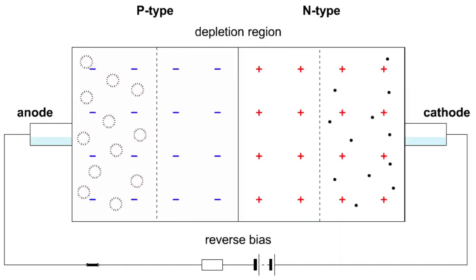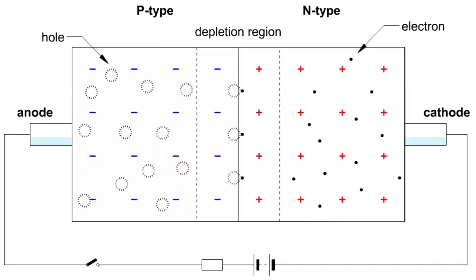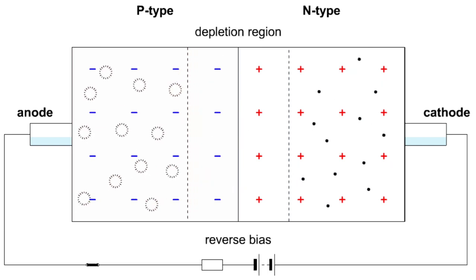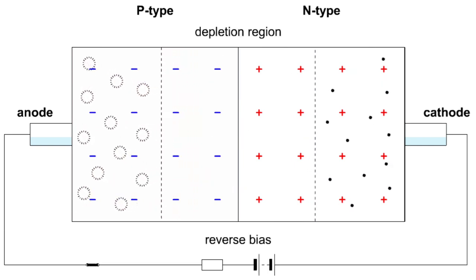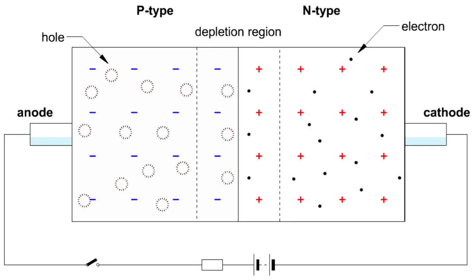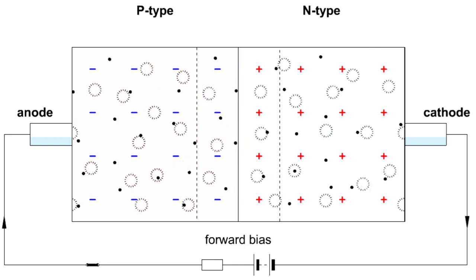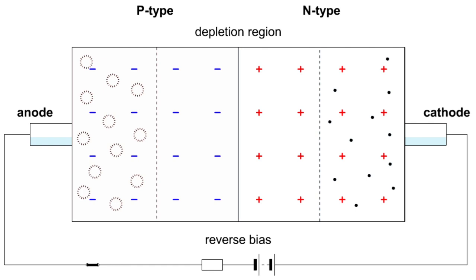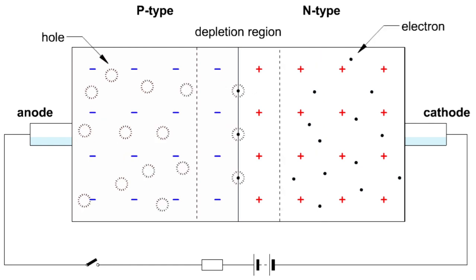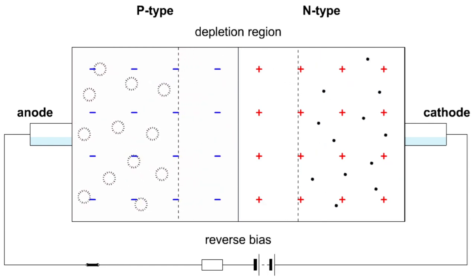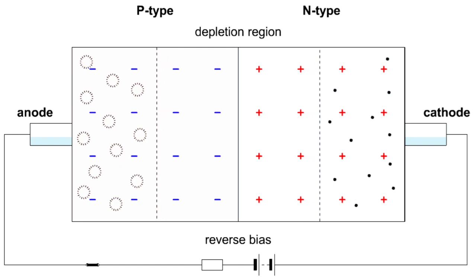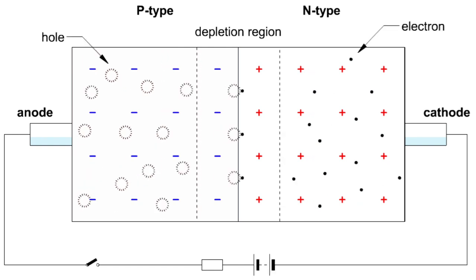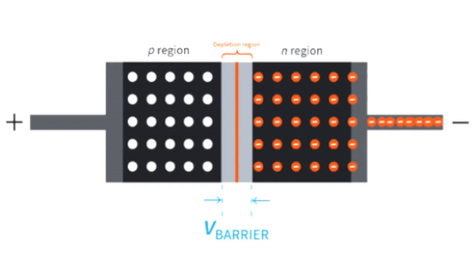In reverse bias operation, the external voltage increases the potential barrier at the junction. This increased barrier prevents majority charge carriers from crossing the junction, resulting in minimal current flow called the reverse saturation current. The reverse current is typically very small, on the order of nano amperes to micro amperes, due to minority carrier conduction and thermally generated carriers.